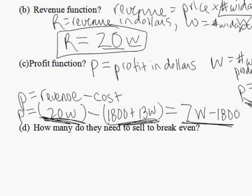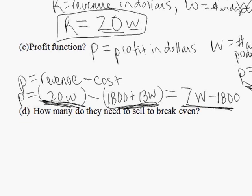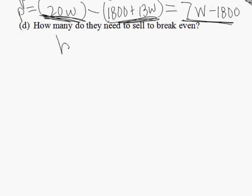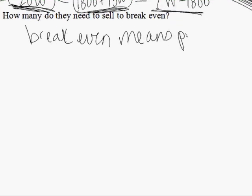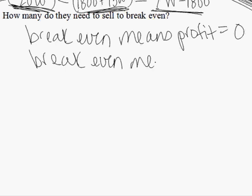Part D asks us how many do they need to sell to break even. Breaking even means the profit is zero. Another way to think about breaking even: breaking even means the amount of money they bring in equals the amount of money that they spent. So, that's where revenue equals cost.